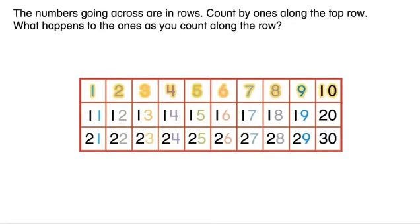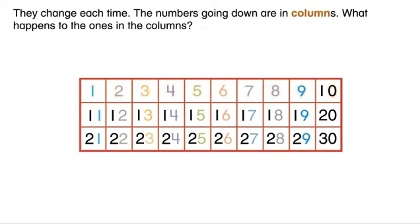The numbers going across are in rows. Count by ones along the top row. What happens to the ones as you count along the row? They change each time.